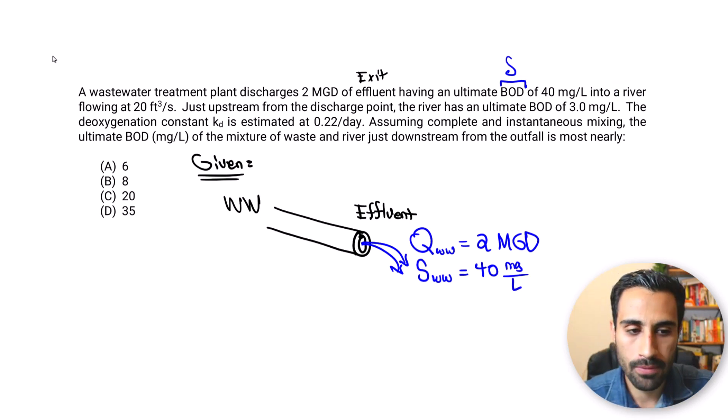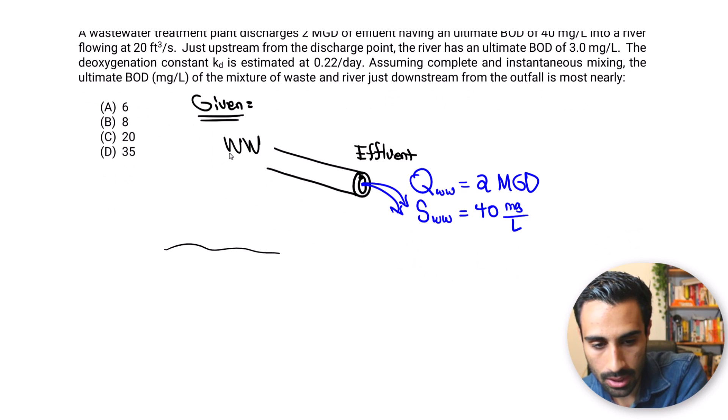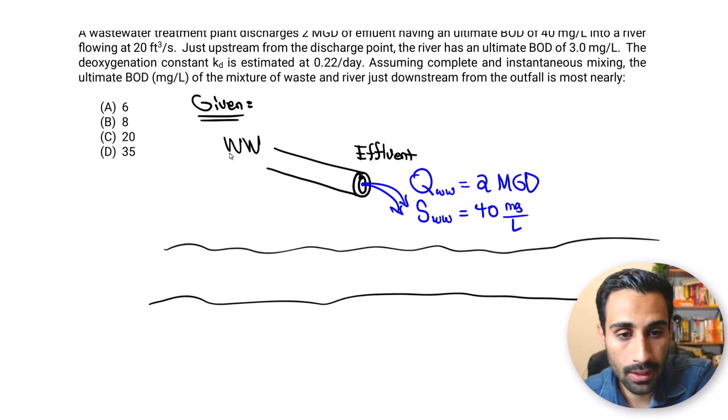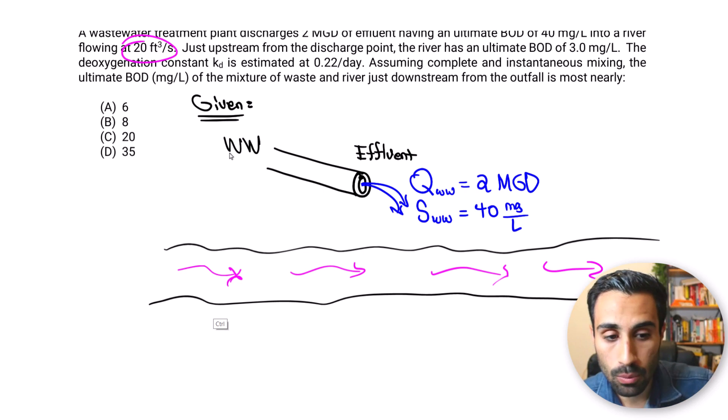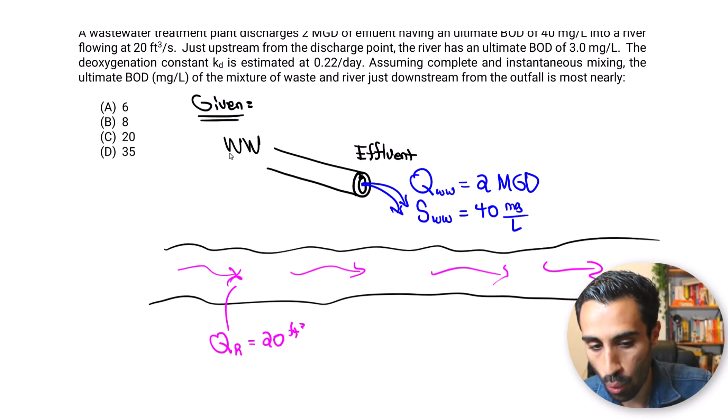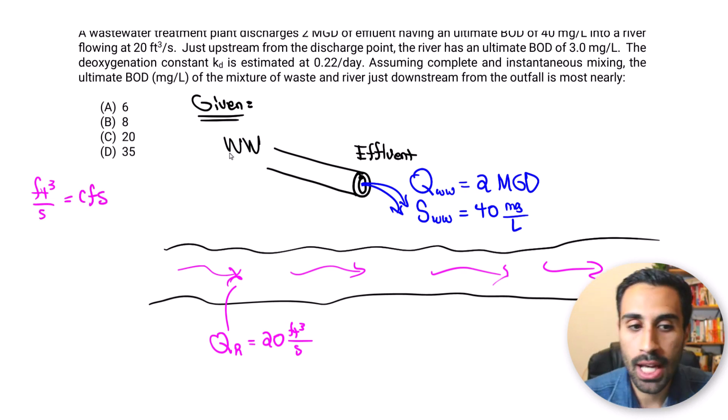So we're done with that. Now we're told into a river. So what's going on here is we discharge it with that pipe into a river. So the river, we can draw like this. This is our flowing river somewhere here, and we know it flows at some flow rate. So the flow rate of the river right here, let's say this is going to be Q for the river is 20 cubic feet per second or CFS.